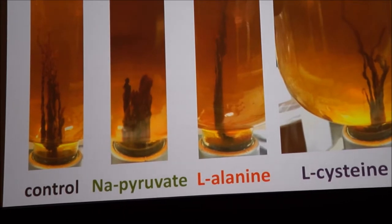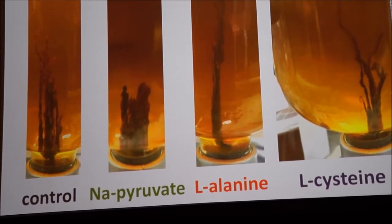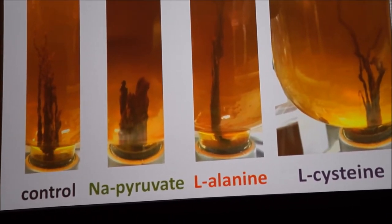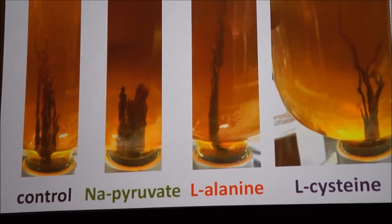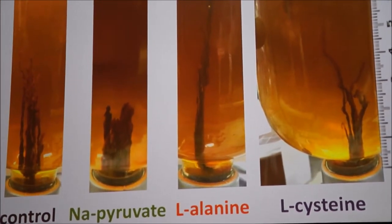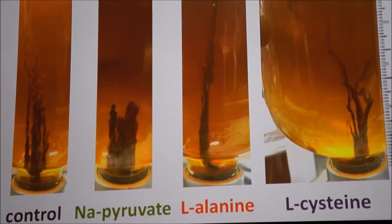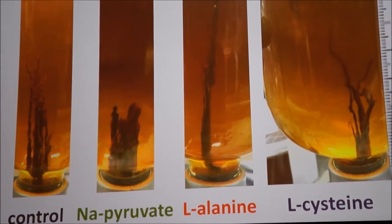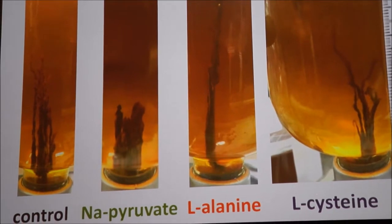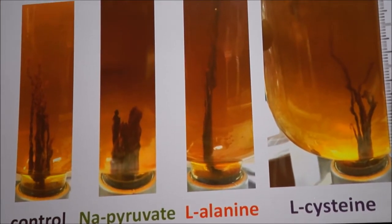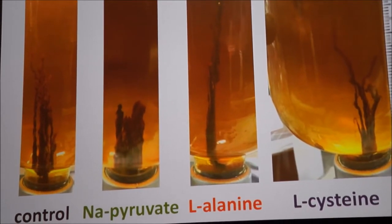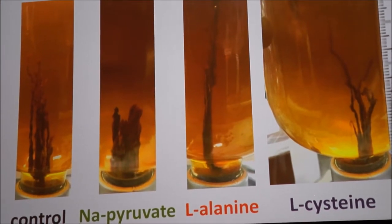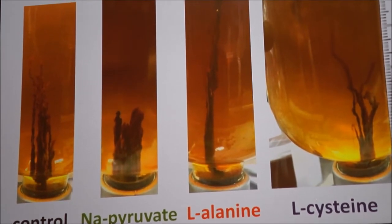As you can see, it causes changes in the overall morphology of each chimney simulant. Pyruvate causes this blob to form. Alanine causes the chimney to make these long stalks. And cysteine causes it to basically just be a gel which is constantly flowing and pools at the top of the reaction vessel.